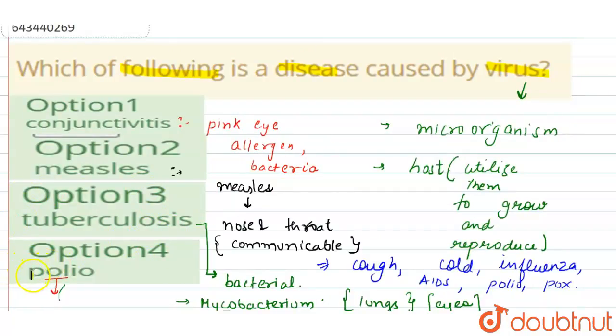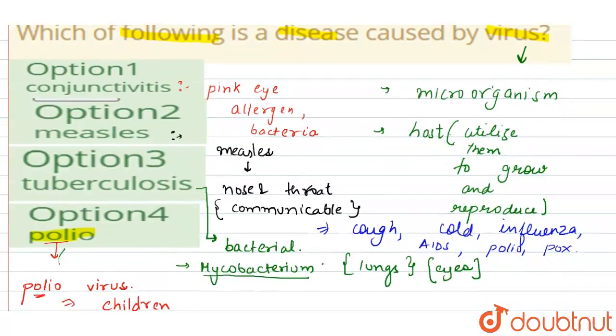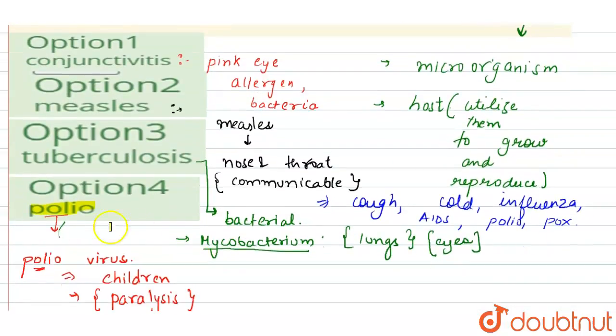The most effective virus which causes a disease is polio. Polio is caused by a virus called polio virus. It is a smallest virus which affects children and causes paralysis.